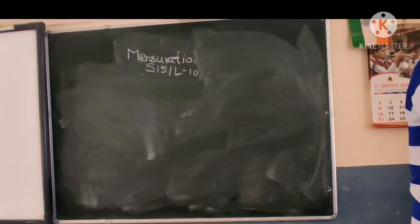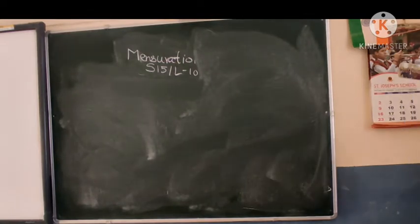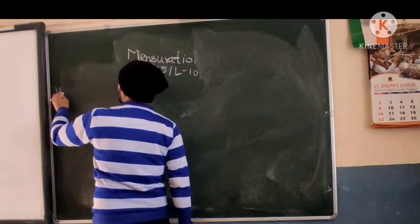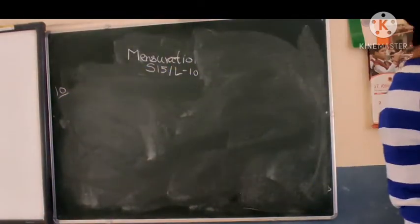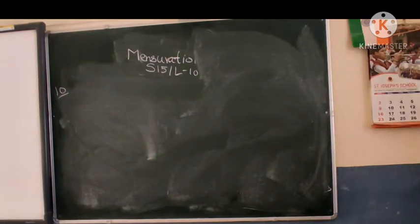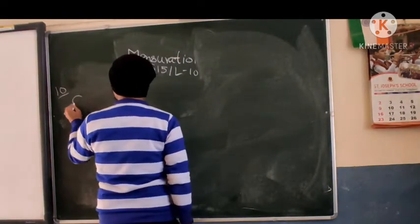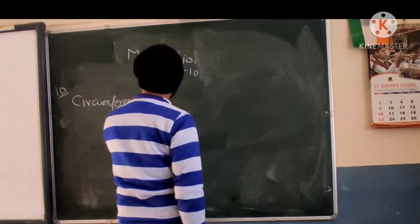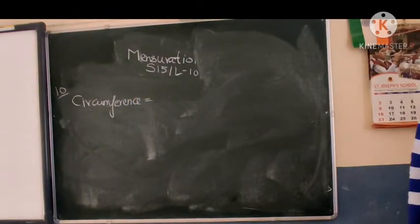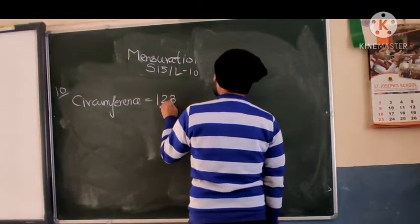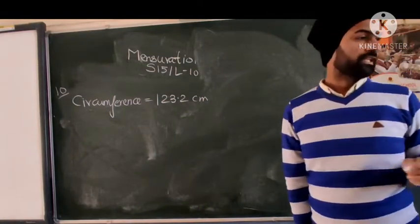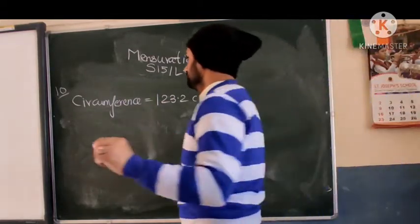Question number 10. Question number 10 has got 3 parts. Let's try. What question number 10 says is the circumference of a circle: find the radius. Circumference is 143.2 centimeter. And what the first part is asking: find its radius in centimeters only.